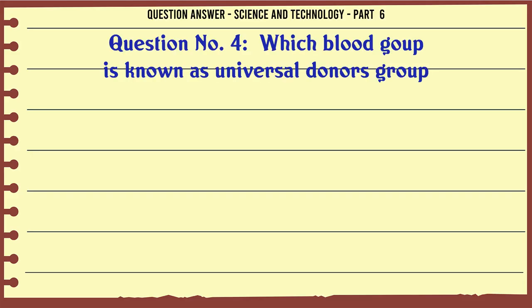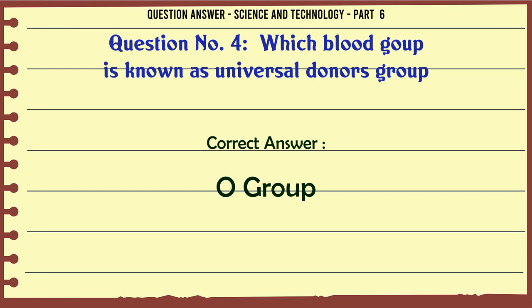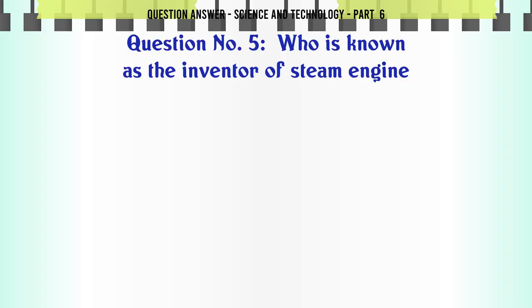Which blood group is known as universal donors group? A. AB Group. B. A Group. C. B Group. D. O Group. The correct answer is O Group.